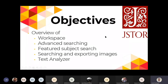Today, what we're going to try to do is see some of the advanced functionalities of the database JSTOR. We're going to see Workspace, some things you can do within Advanced Searching, also the Featured Subject Search, how to export images, and how to use the Text Analyzer.